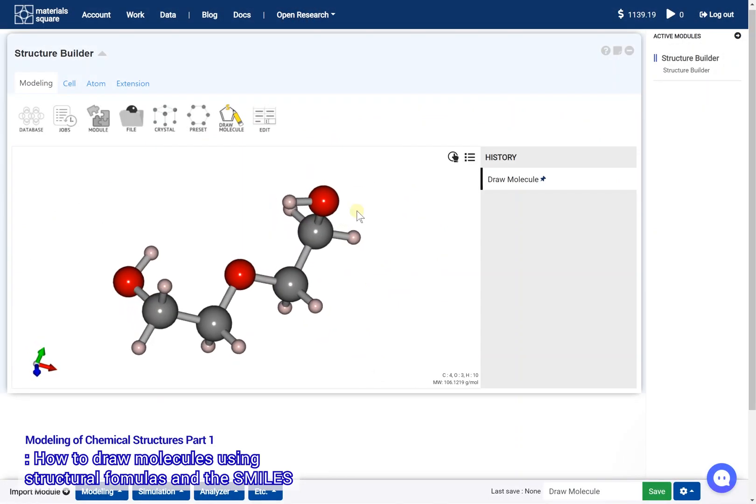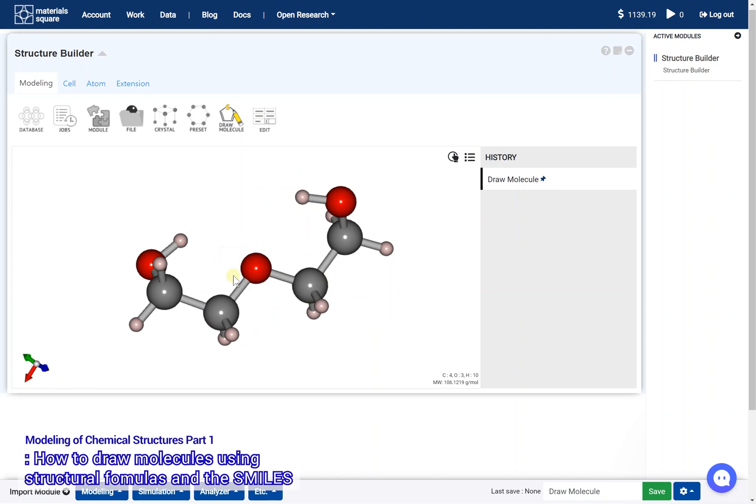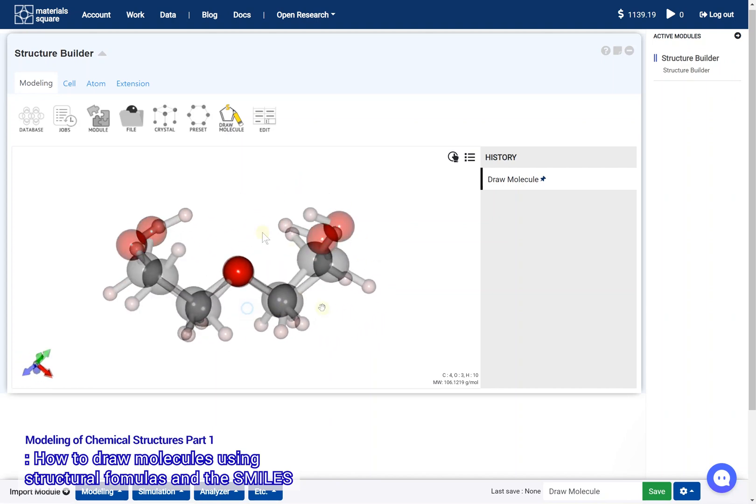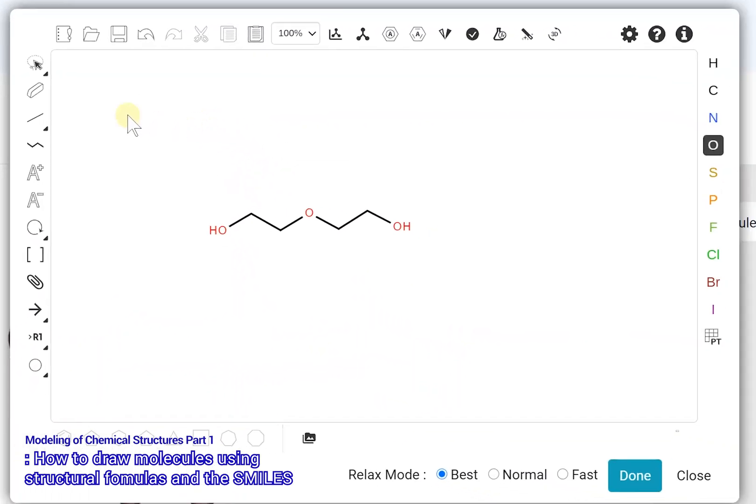Another example is drawing a diethylene glycol molecule with the SMILES, which is a line notation using short ASCII strings. Open the Draw Molecule canvas again, and click the Clear Canvas icon to erase your previous work.